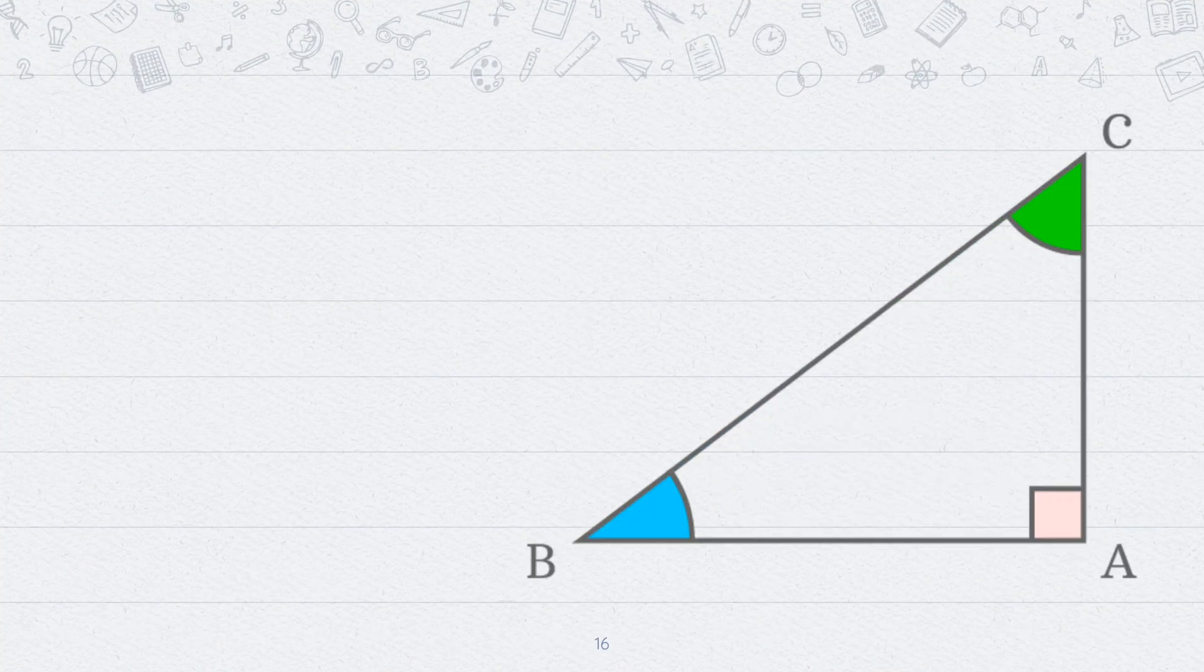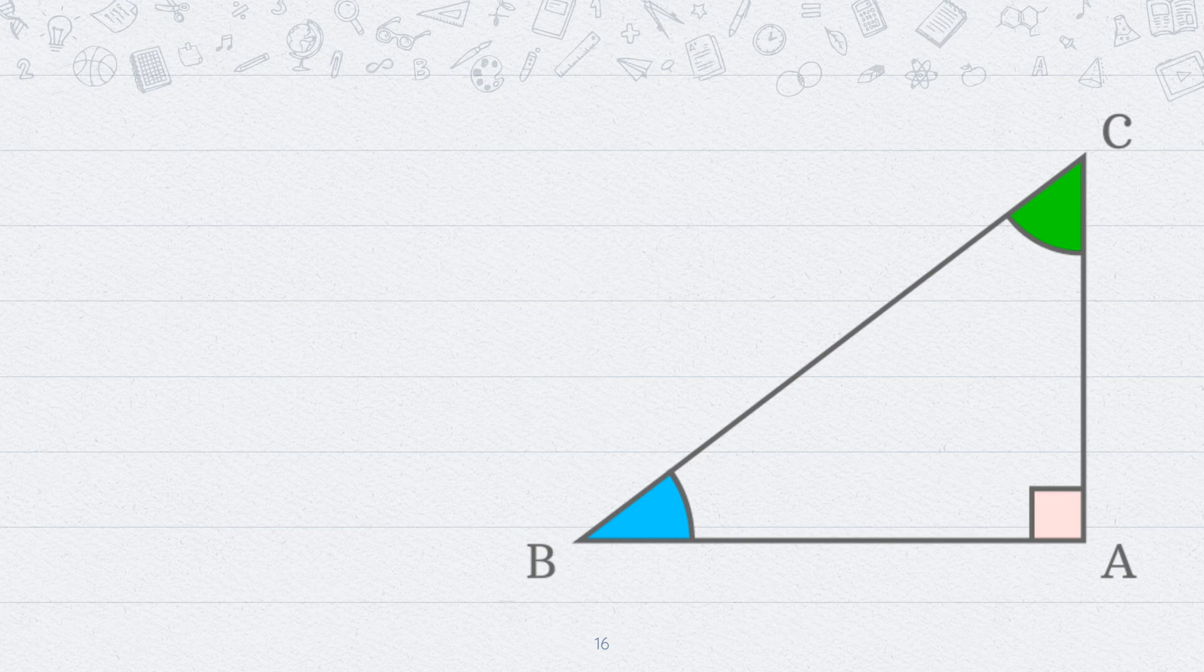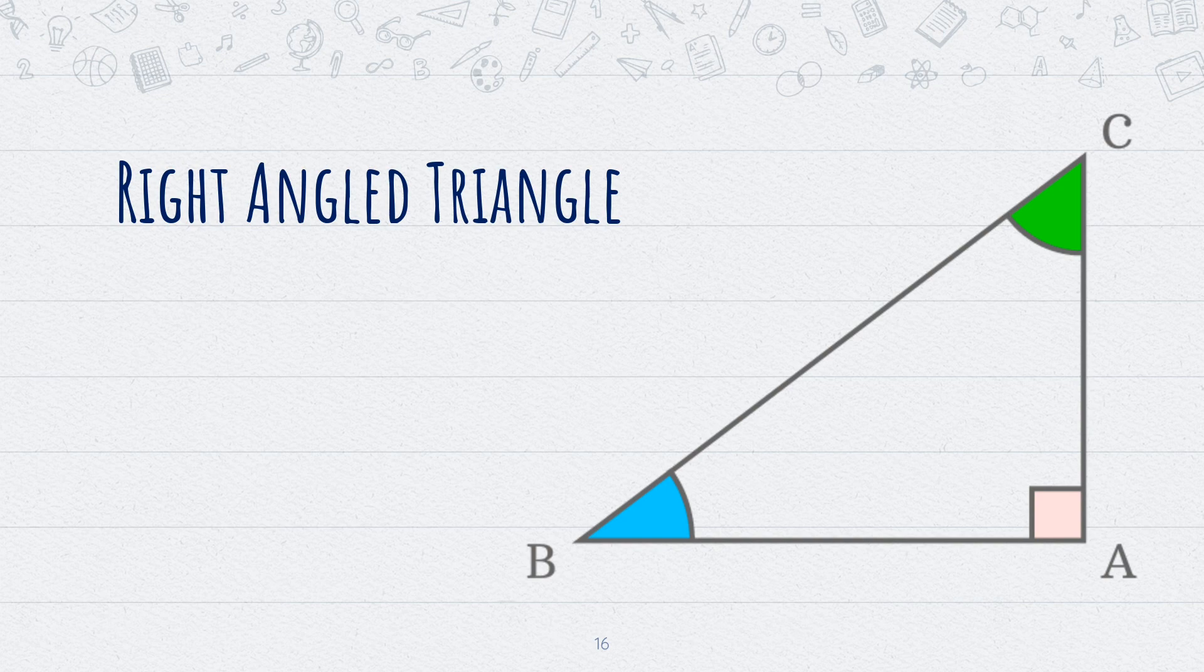Now look at this triangle. In this triangle, angle A is represented by straight lines. This is a 90 degrees angle. A triangle that has one angle equal to 90 degrees is called a right angled triangle.